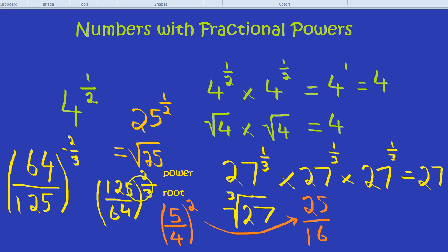So all of that hard work of 64 over 125 to the power of minus 2 thirds, we get the final answer of 25 over 16. The minus flipped it. The 3 on the bottom line cube rooted it. And the 2 on the top line of the fraction powered it by 2, squared it. And that's how you do numbers with fractional powers.